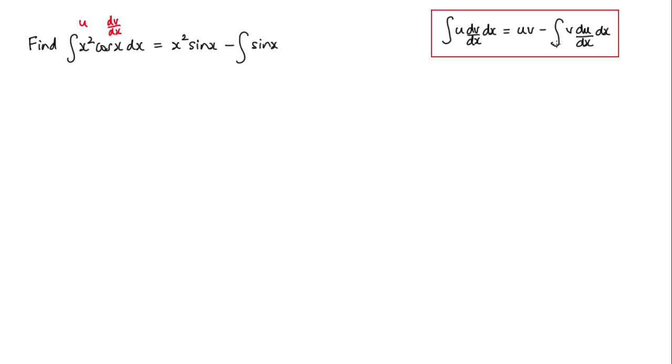And that's multiplied by du by dx. In other words, I need to differentiate x squared to give 2x, and that's with respect to x.